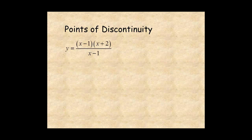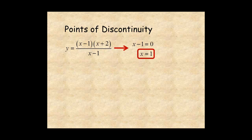In this example, there's a factor of x minus 1 in both the numerator and the denominator. These factors have a zero at x equal 1. When the zero is a zero of both the numerator and the denominator, the point of discontinuity is called a hole. To see why this is a hole, notice that when x is not equal to 1, the factors of x minus 1 cancel out, and you have the line y equals x plus 2.